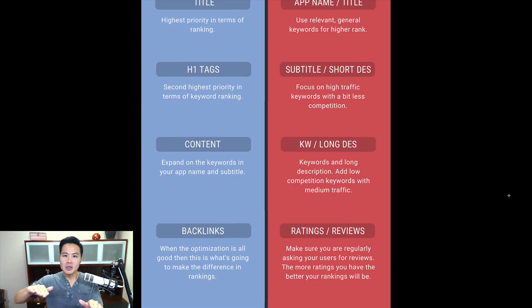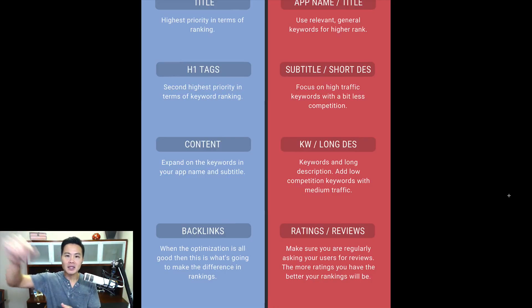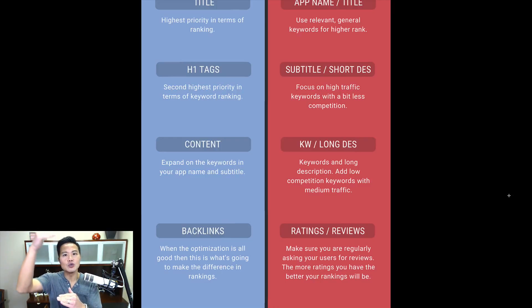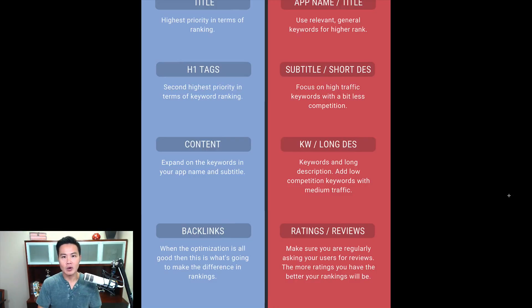From an ASO perspective, when all the optimizations are equal — everybody has 'meditation' in the app title, in the subtitle — what's going to get you above your competition is having a lot of ratings and a lot of good reviews. That's what will really help you rank better for your keywords.